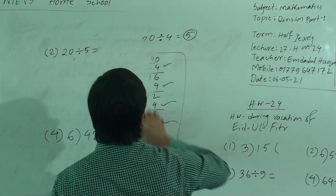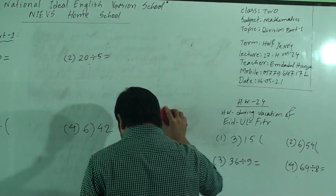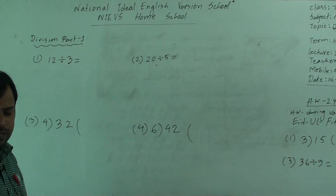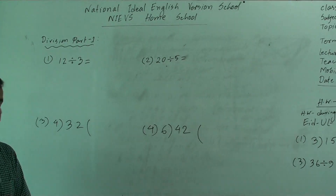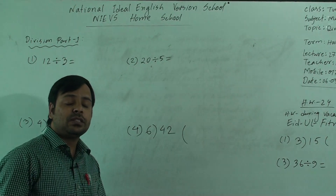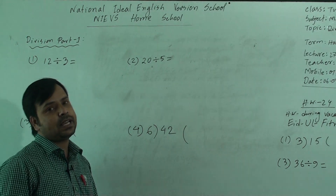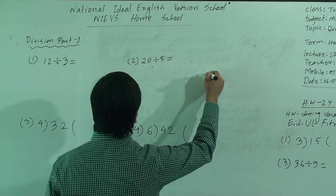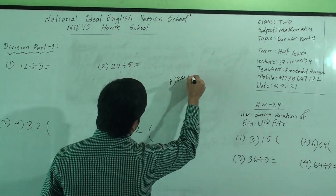Dear students, let us see how we can do division. In this first class of division, we will learn how to divide a number by a single digit number. We just need to know the times table. Now suppose 20 is a number. If we divide 20 by 4, we will get 5 here.